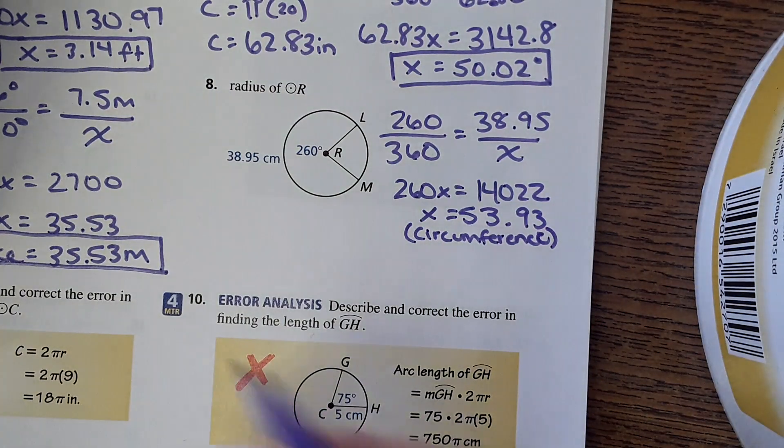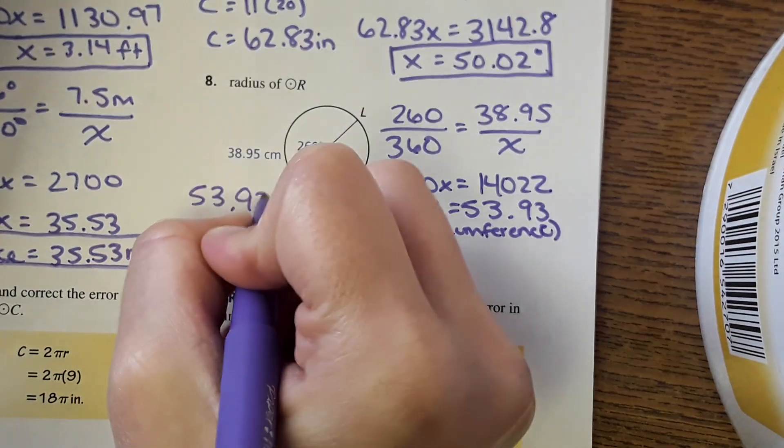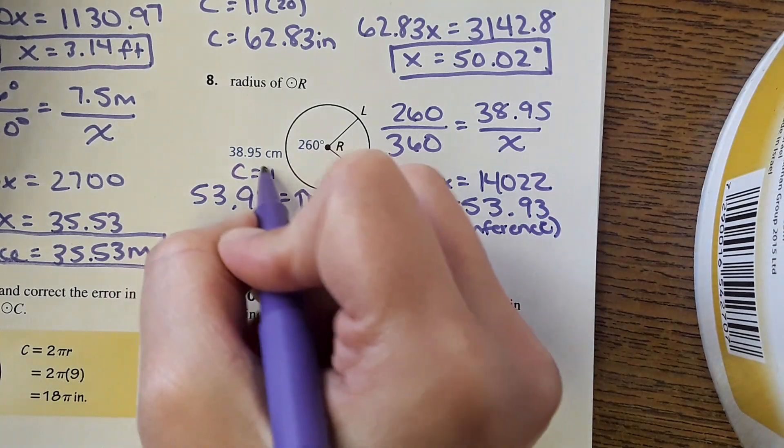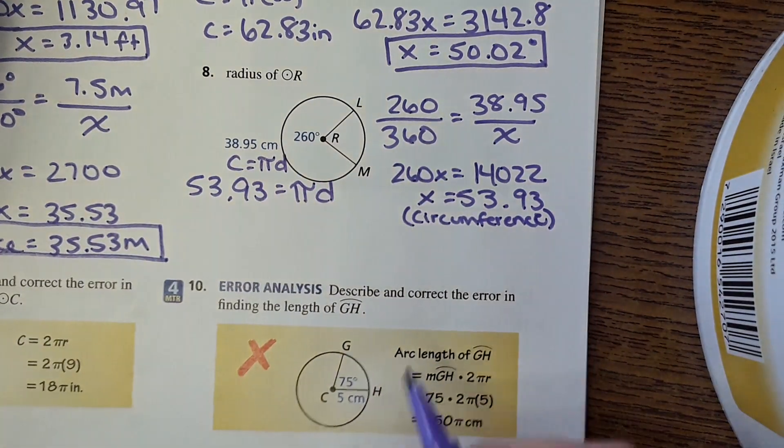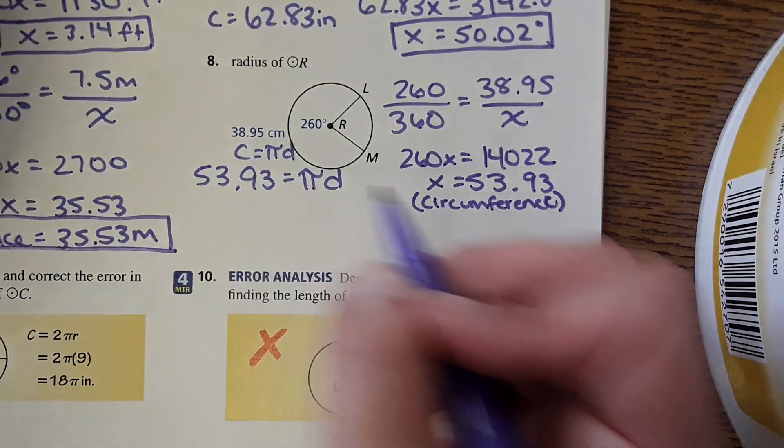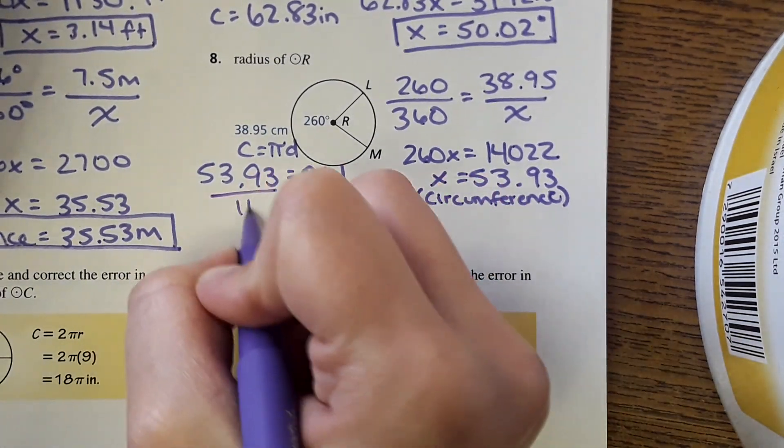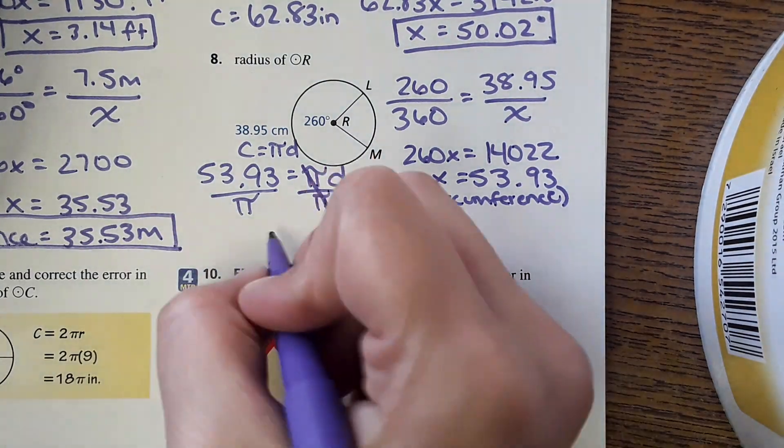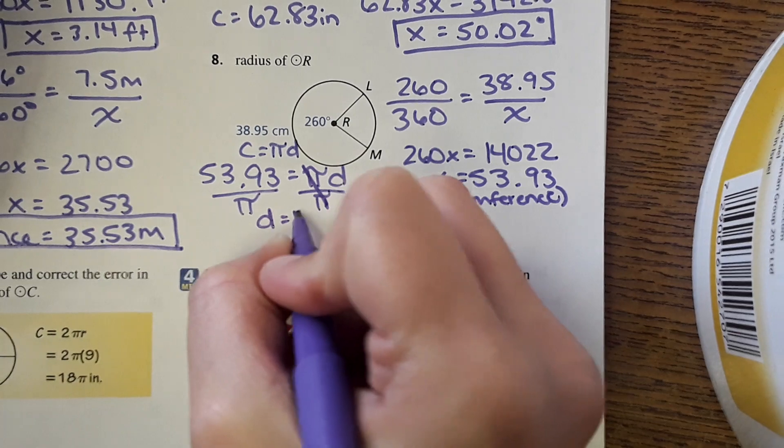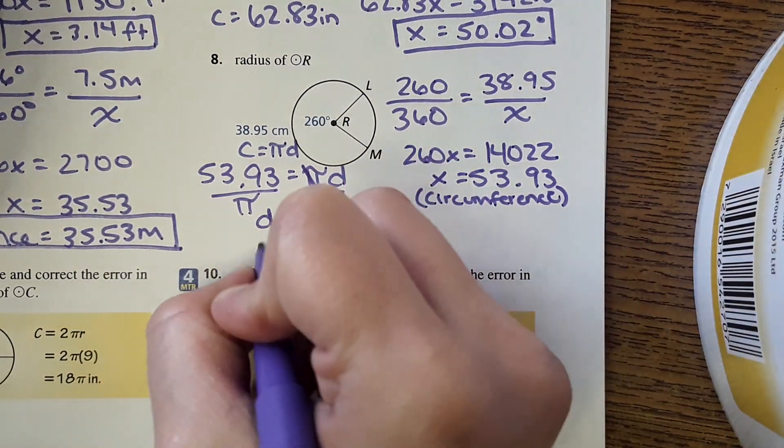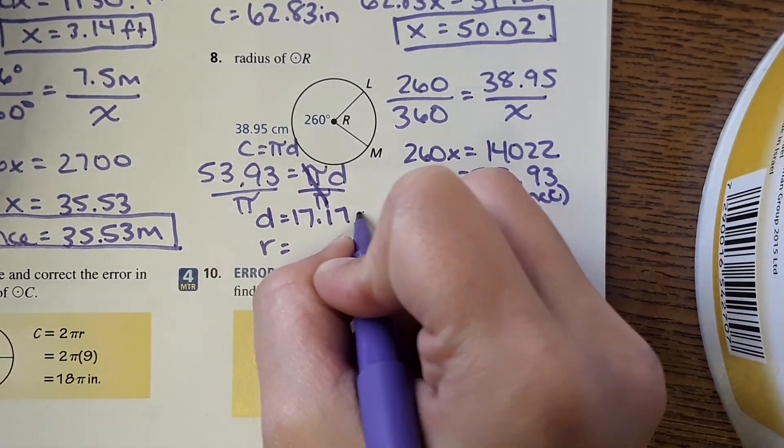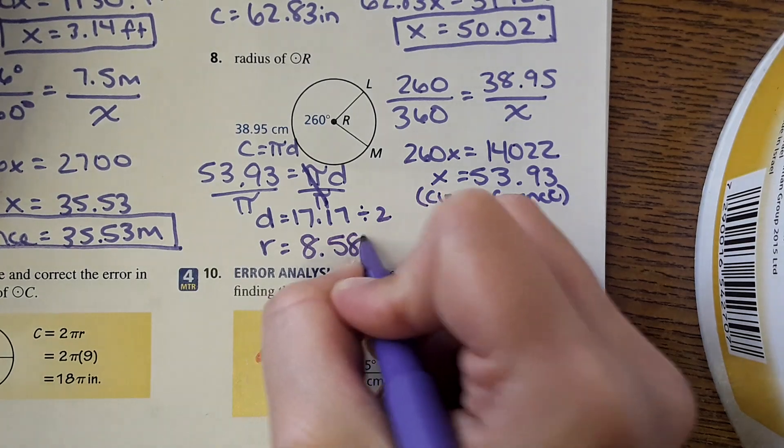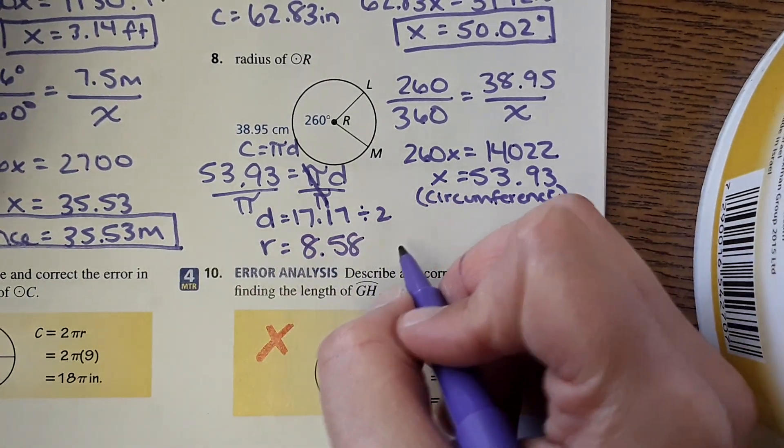Okay, so I just found the circumference. 53.93 equals pi times the diameter, because circumference equals pi times diameter. So then I'm going to solve for diameter by dividing both sides by pi. Diameter equals this, and then radius, I divide it by 2 to get the radius, and 8.58 centimeters.